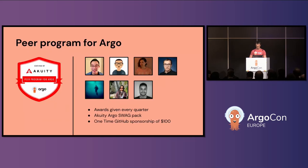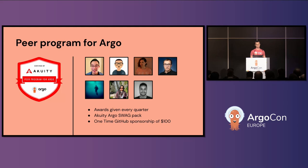The whole Acuity team thinks community contribution is extremely important for project health, and we want to express our gratitude. The Acuity Peer Program for Argo is one of the ways we say thank you to contributors. The idea is simple: we pick outstanding contributors and reward them. We make sure everyone knows about their contributions so they can get credit — we tweet about it, blog about it, provide an awesome Argo swag pack, and GitHub sponsorship. So far only seven people have received the award, which is an embarrassingly small number. This is a call to action: if you have someone in mind, please navigate to acuity.io, find the Peer Program page, and submit your nomination.